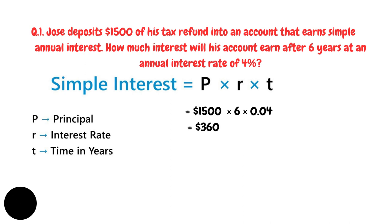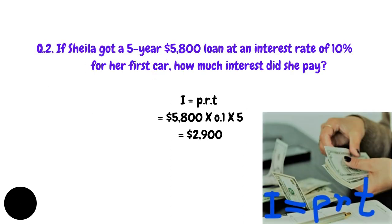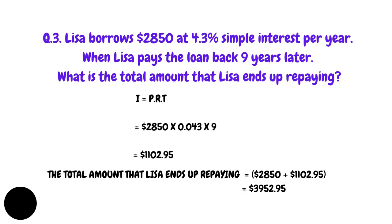Another problem: Sheila got a five-year $5,800 loan at an interest rate of 10% for her car. How much interest did she pay? Using I = PRT: P = $5,800, R = 10% which is 10 divided by 100 = 0.10, T = 5 years. Multiplying gives a simple interest of $2,900.